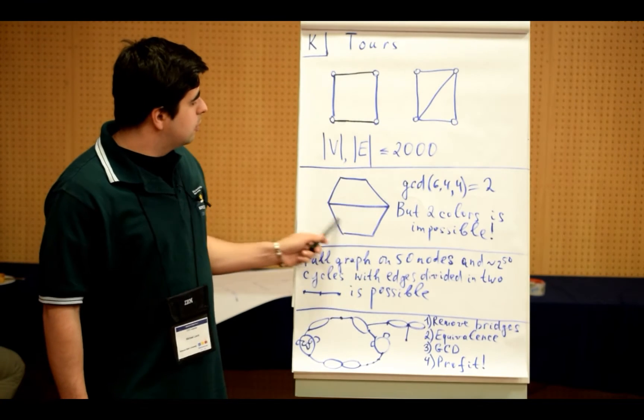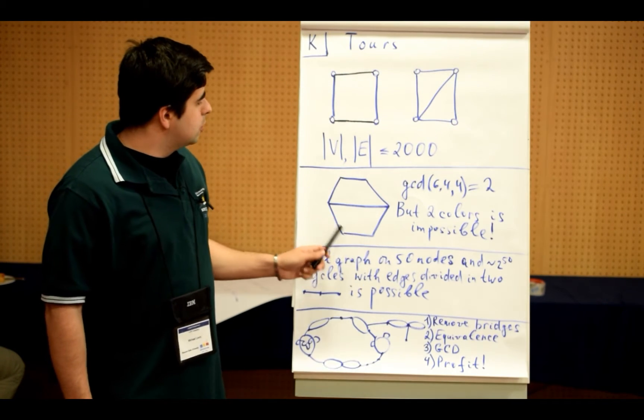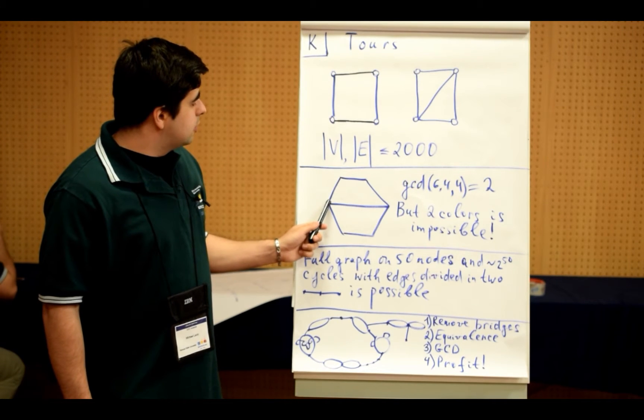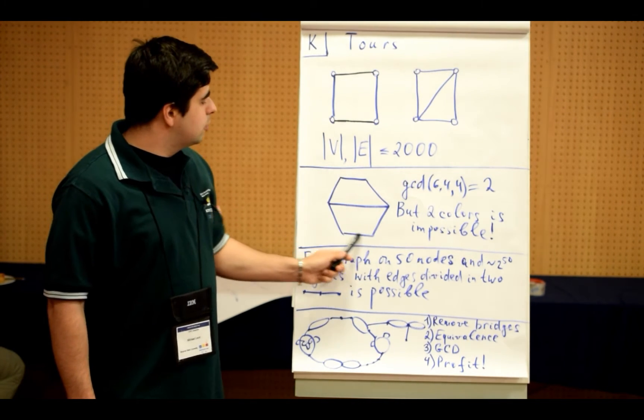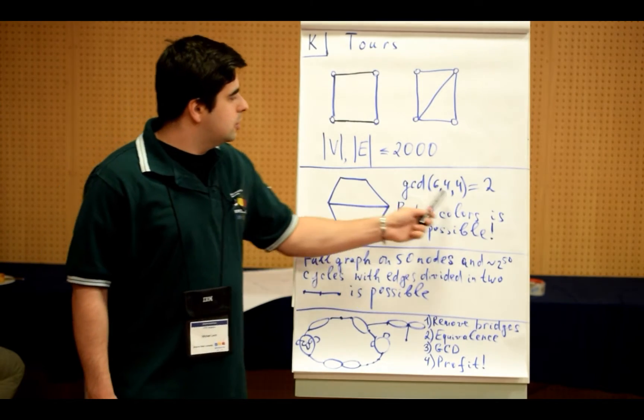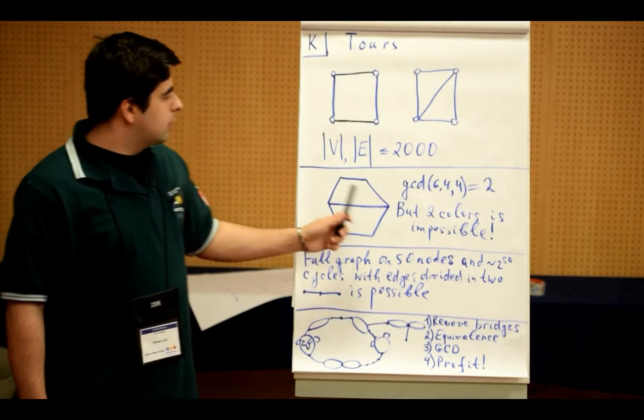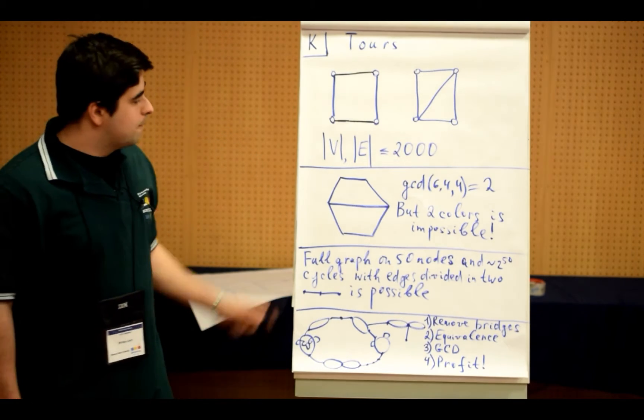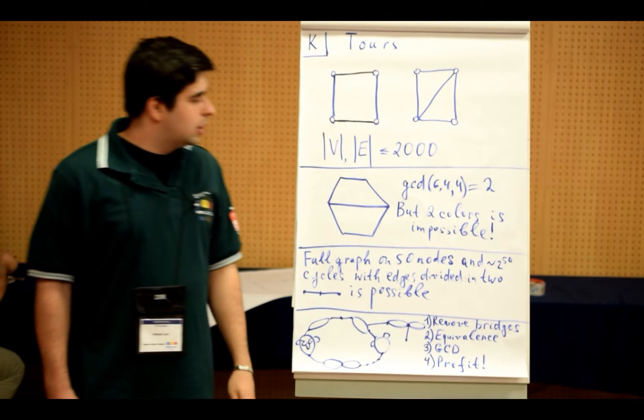For example, in this case, we have a graph with six nodes and seven edges. And this graph has three cycles. One of length six and two cycles of length four. So the GCD is two. But you can check for yourself that two colors for this graph is actually impossible. So this is one of the tricky common cases.